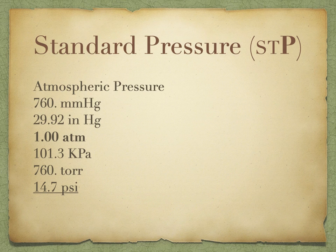PSI — pounds per square inch — is probably the unit most familiar to you, as it's used when inflating bike or car tires. It directly reflects the definition of pressure as force per unit area, with pounds as force and square inches as area. Average atmospheric pressure at sea level is about 14.7 PSI. These values are what we refer to as atmospheric or standard pressure values.